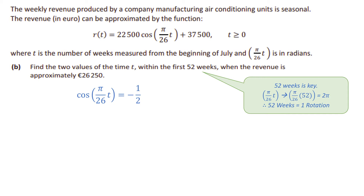2π is two 180s, which is 360 degrees — one full rotation. So what they're asking us is to solve within one full rotation. We only need to look at the unit circle. Another hint is that they only wanted two values. In section a we can have to find many answers or even a general solution formula.